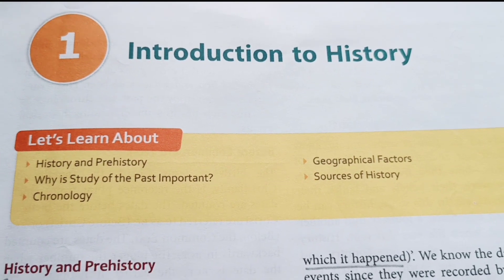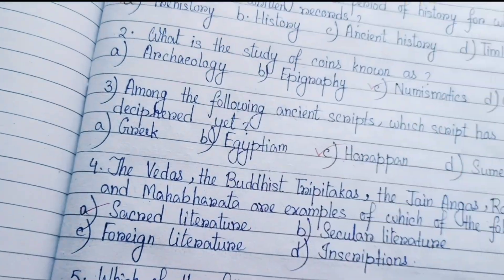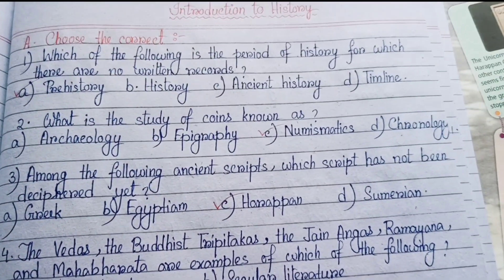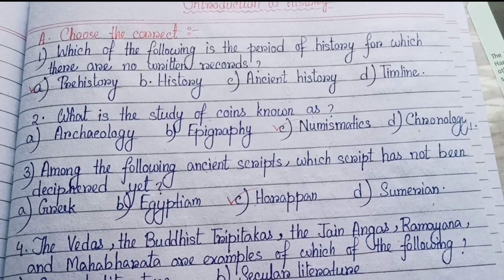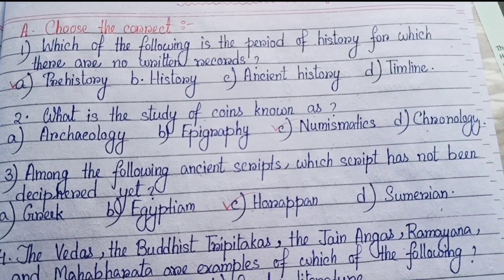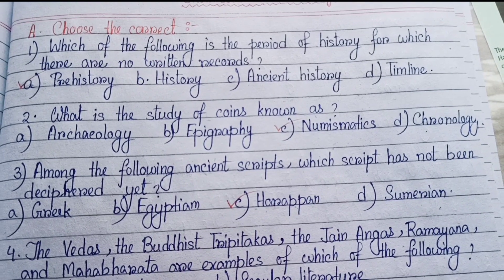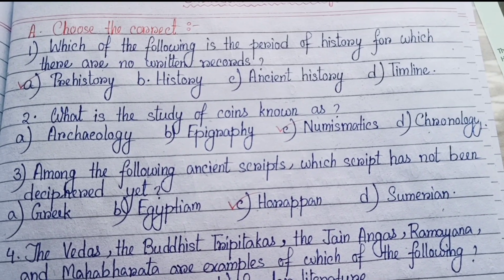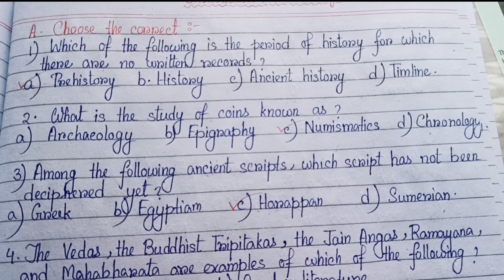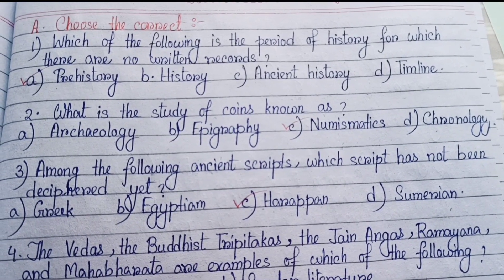So let's start Class Six History Book, Chapter One: Introduction to History. First, there are some objective type question answers from the chapter. Section A: Choose the correct answer. Number one: which of the following is the period of history for which there are no written records? Answer is number A: Prehistory.